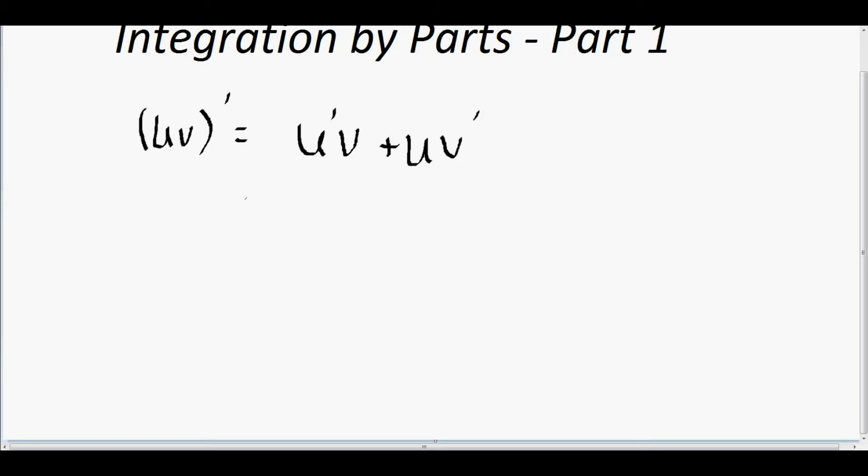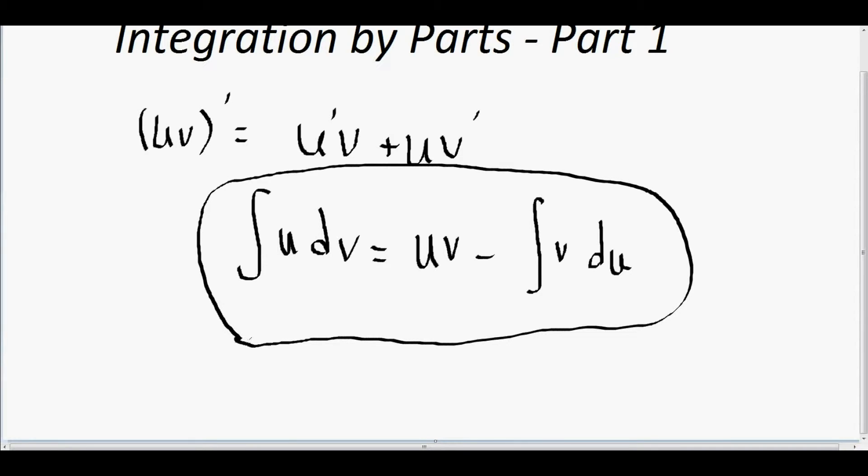To get the formula: the integral of u dv equals uv minus the integral of v du. As I said, the derivation for this formula is they just took the product rule and solved for u v prime.